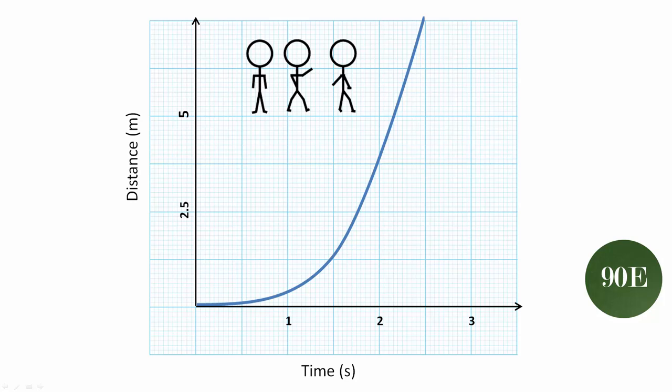Although we have acknowledged that objects and people don't travel at a constant speed in our previous videos, the distance time graphs that we've been looking at so far have been of objects traveling at a constant speed. This graph instead illustrates the increasing speed that a person gathers as they go from standing to walking.